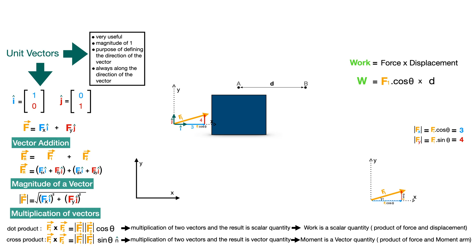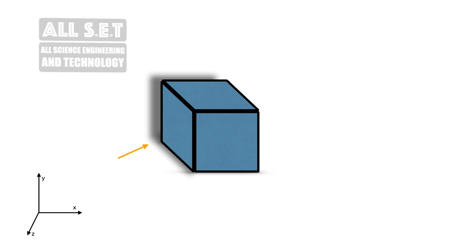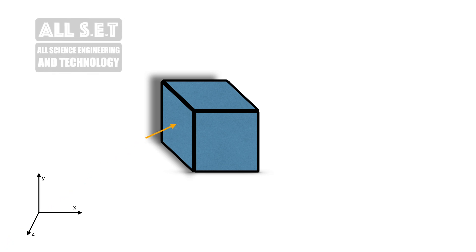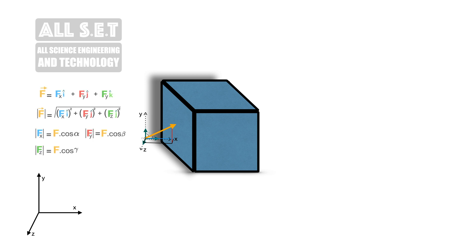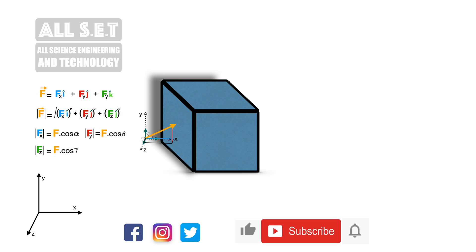The magnitude of the resultant vector can also be obtained in 3D planes. In 3D, we use three axes — x, y, and z — and the vector will have three unit vectors: i-hat, j-hat, and k-hat respectively. The calculations in 3D will follow a similar approach, but that's a topic for another day.